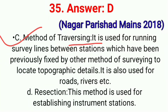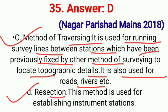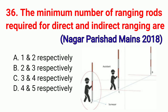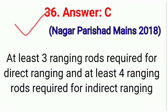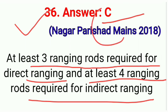Third, method of traversing — used for running survey lines between stations previously fixed by other methods of surveying to locate topographic details; also used for roads and rivers, etc. Fourth, resection — this method is used for establishing instrument stations. Question No. 36. The minimum number of ranging rods required for direct and indirect ranging are — correct option C: Three and four respectively. At least three ranging rods are required for direct ranging and at least four ranging rods are required for indirect ranging. Correct option C.